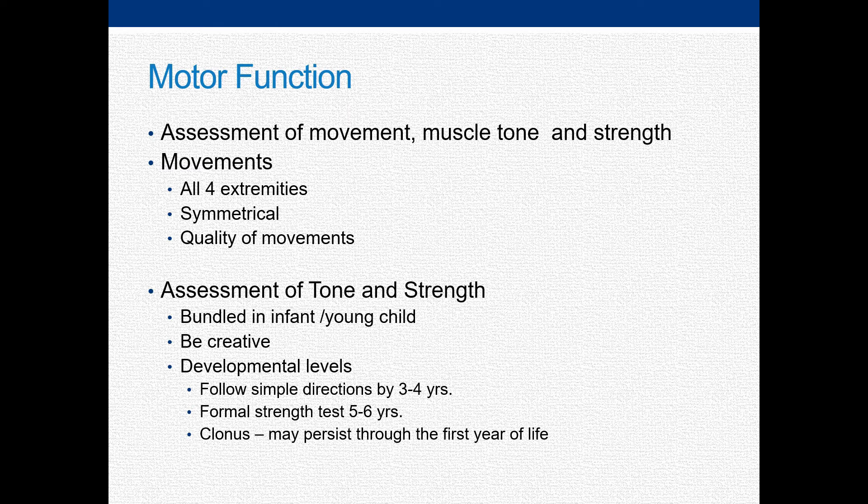Assessment of strength and movement against gravity may be assessed by asking the child to reach up for an object. Infants as young as 4 months will reach and by 5 months should be able to grab. Sometimes it will take presenting a pacifier or a favorite object if available. Again, look for asymmetry. With lower extremities, look to see if they are able to lift their legs up during the exam or are trying to push against the table to roll over. By 3 to 4 years, the child is able to follow simple commands so that the exam should take on more of the shape of an adult assessment.